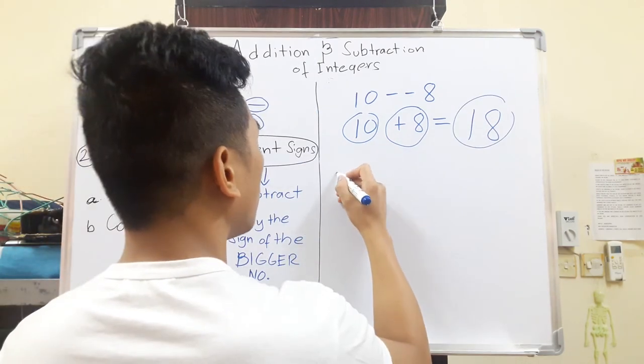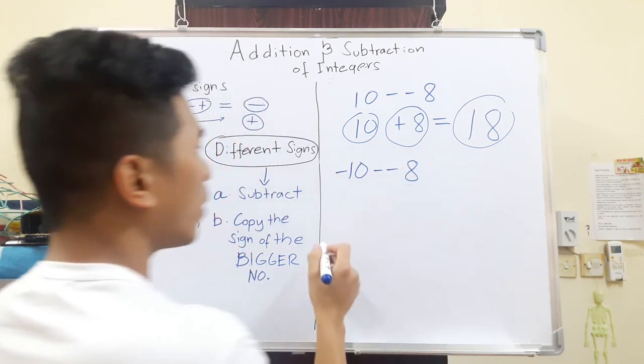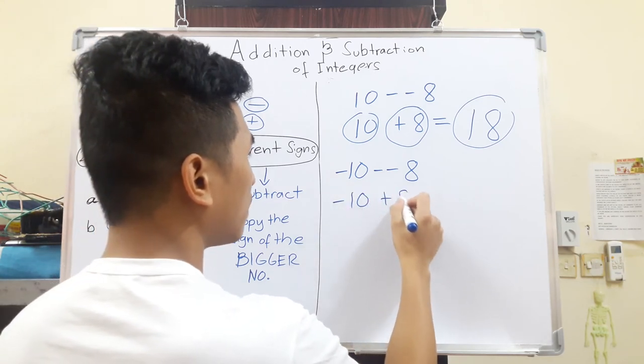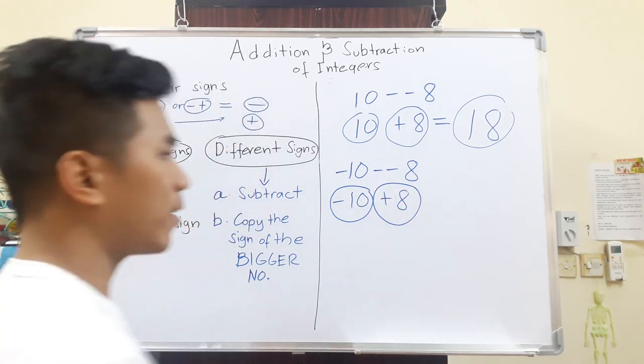One last example. Negative 10 minus minus 8. So again, we have two minuses here. We have to simplify it, make it 10+8. Negative 10+8. Now, I will circle it just to help me better.